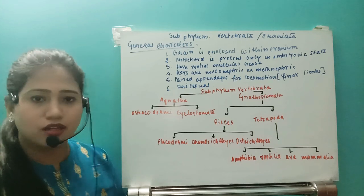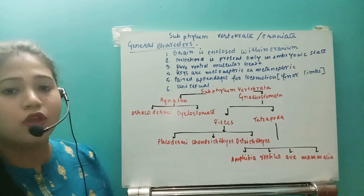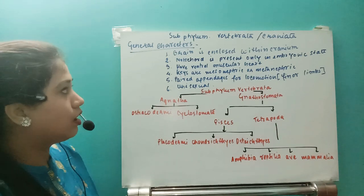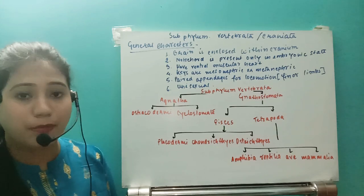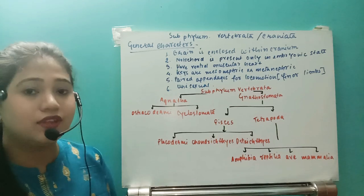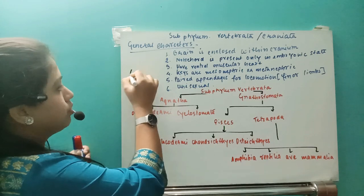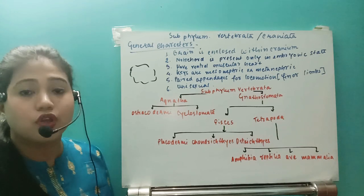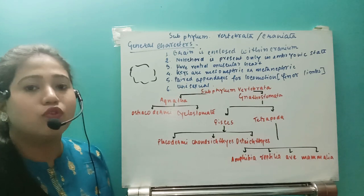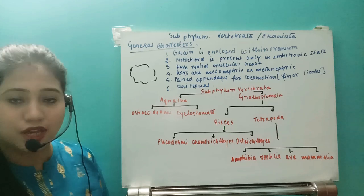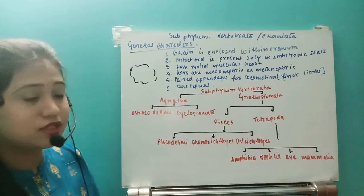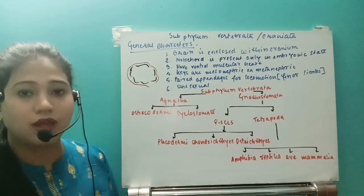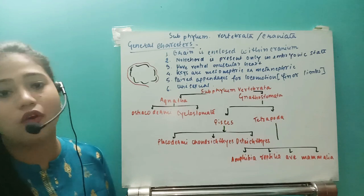Let us see the general characteristics of vertebrates. First, the brain is enclosed within a brain box. The protective membrane around the brain is known as cranium. The brain and neurons are very delicate, so between the skull bone and the brain there is a protective membrane of three sub-layers, known as cranium. The presence of cranium is a typical characteristic of subphylum Vertebrata.